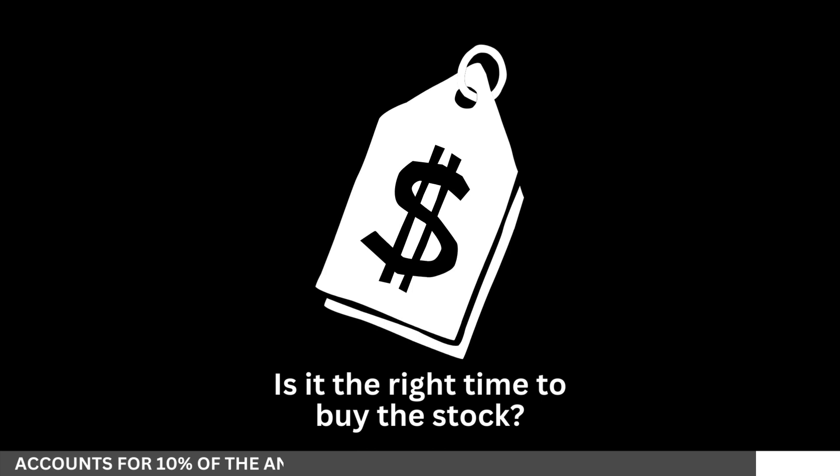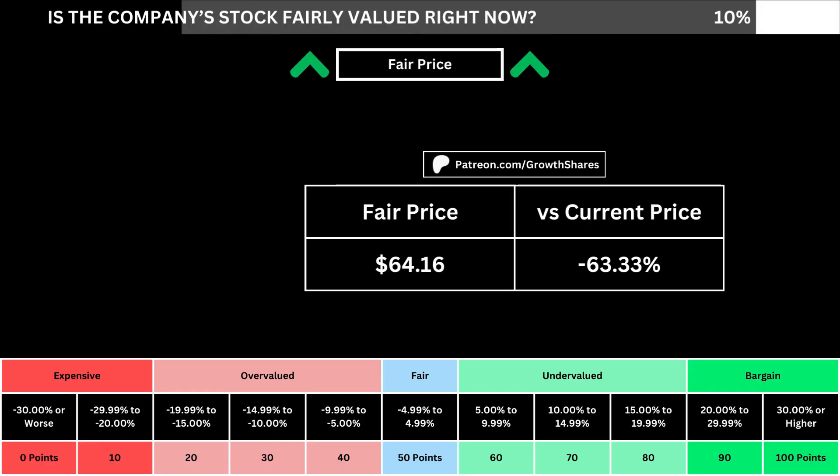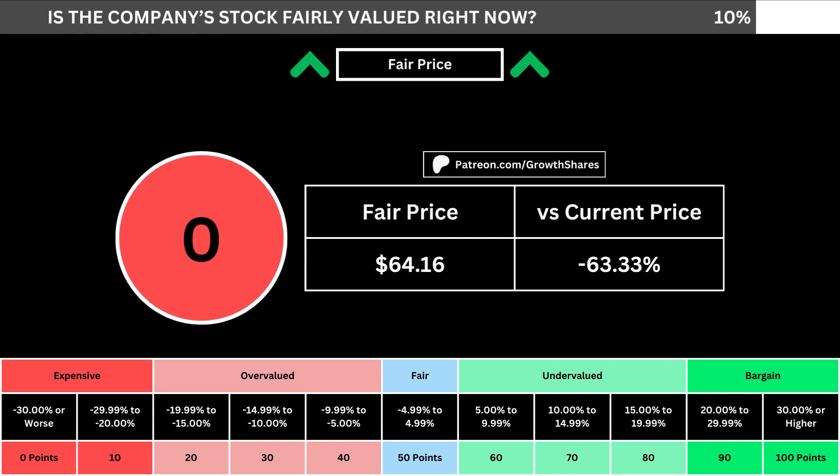But of course, we can't forget about the fair price and whether it's the right time to buy the stock. I use a discounted cash flow model taking into account a 10% margin of safety. That translates into the company's fair price and how many percentage points above or below its current price the stock is. When we compare those numbers with the table below, we can see where the company's stock lies in its intrinsic value spectrum right now.